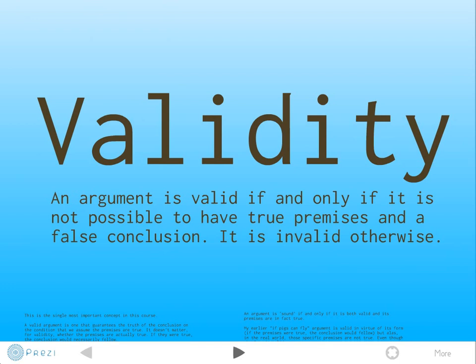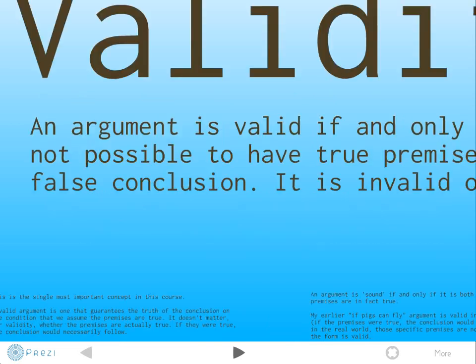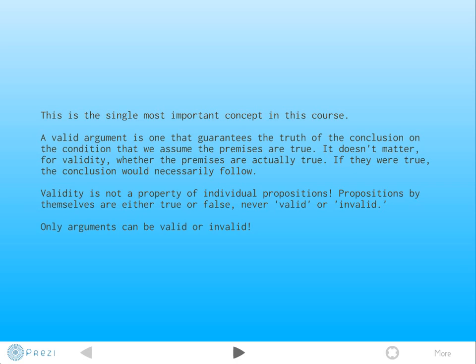As we just saw, some argument forms guarantee the truth of the conclusion. This is a property known as validity. An argument is valid if and only if it's not possible to have true premises and a false conclusion. If the premises are true, the conclusion is guaranteed to follow. If we start from true premises, we keep true conclusions. That's the essence of the deductive property, or the property of validity. It's really the single most important concept in this entire course. A valid argument is one that guarantees the truth of the conclusion—I keep repeating myself because it's so central.